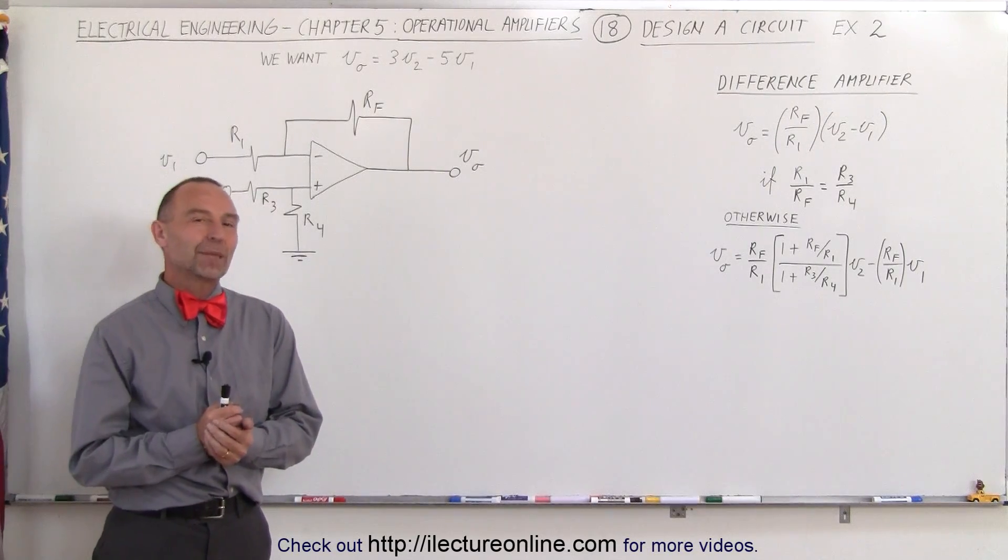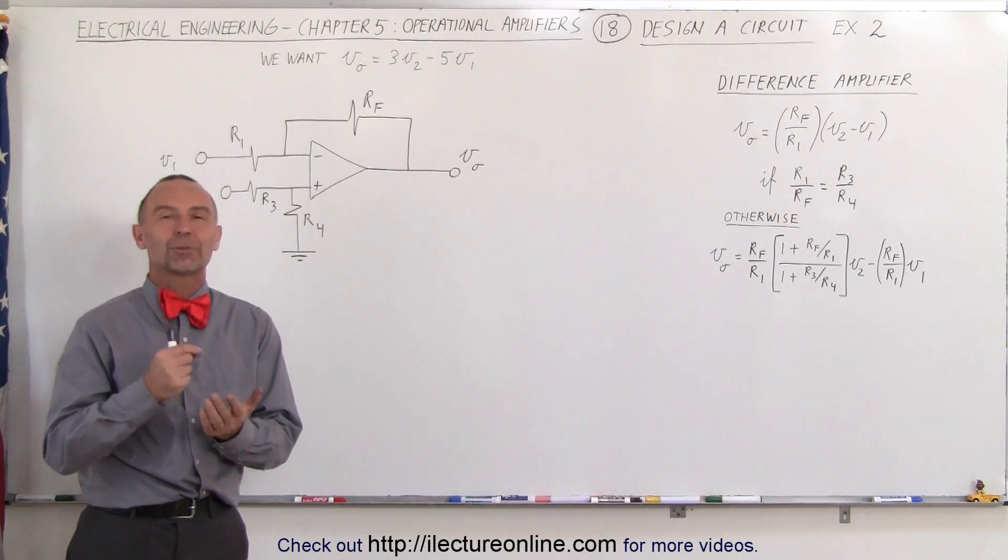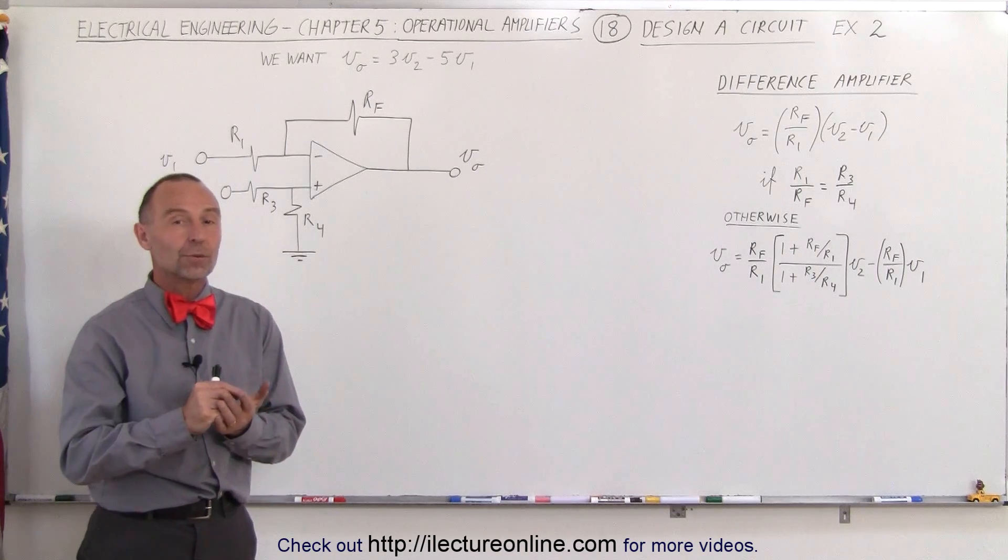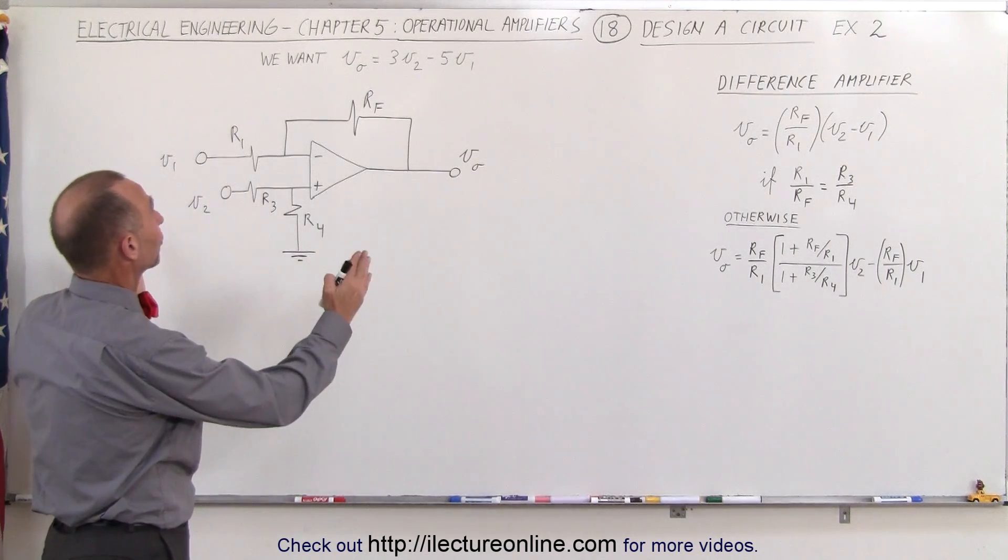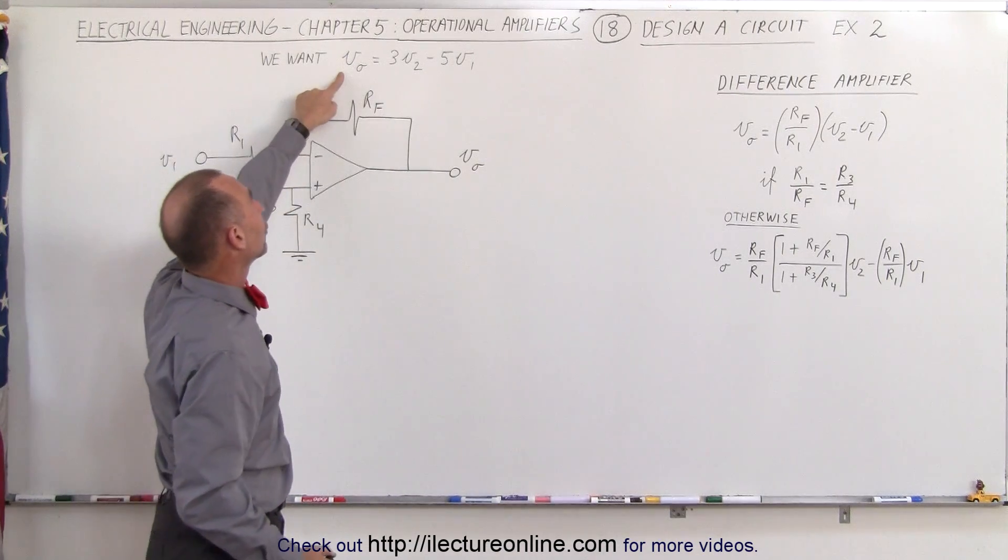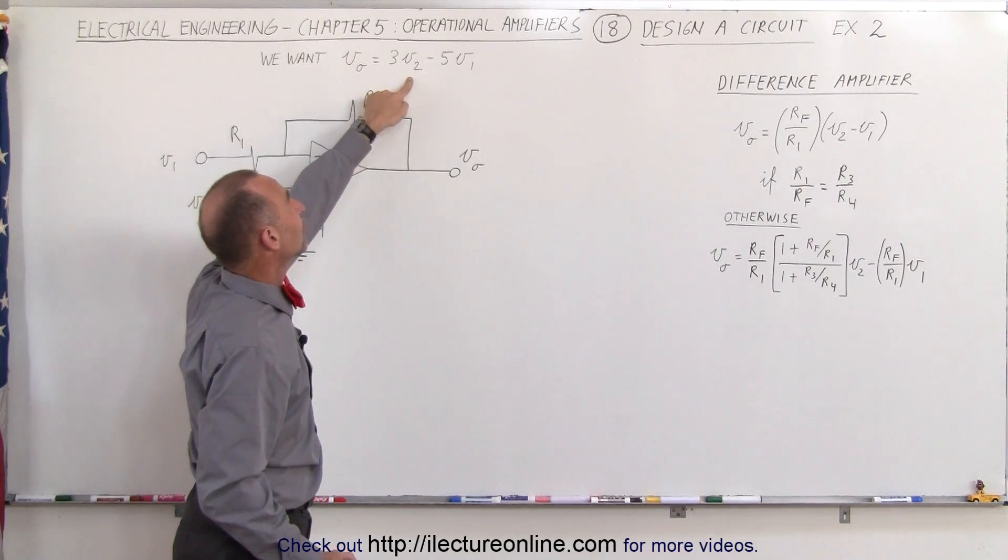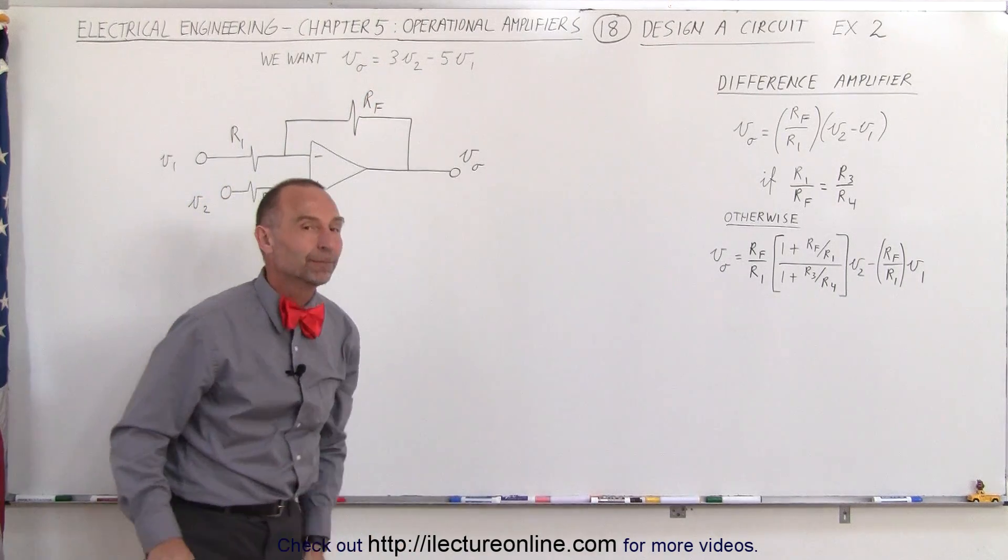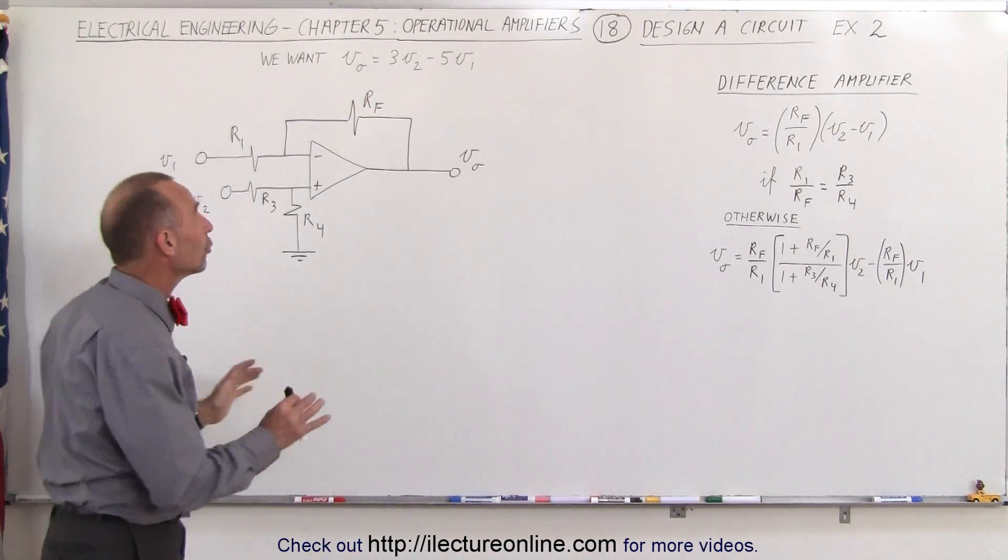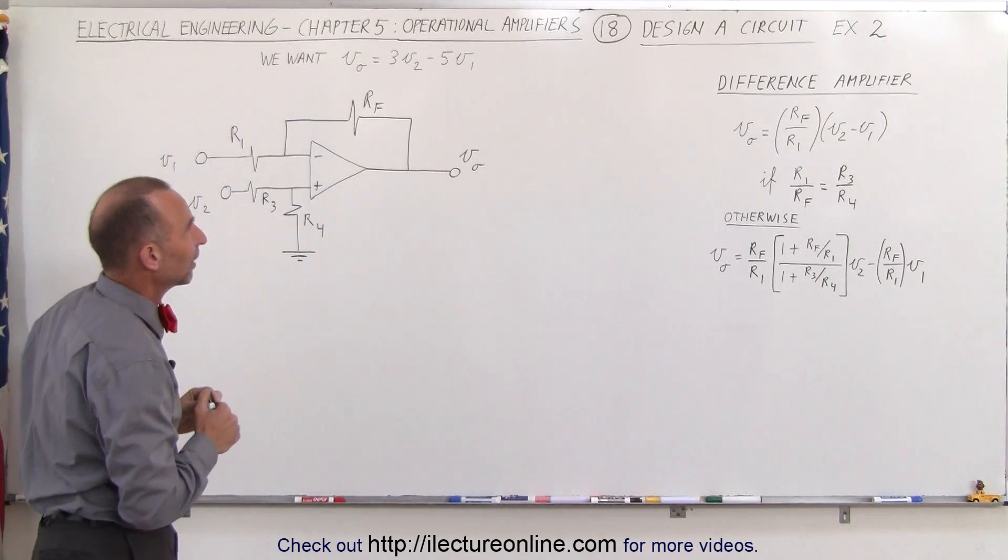Welcome to ElectronLine. In this video we're going to try and accomplish the same thing as we did in the last video, have an operational amplifier circuit that will give us an output voltage equal to 3 times V2 minus 5 times V1. But in this case we're going to use a difference amplifier.